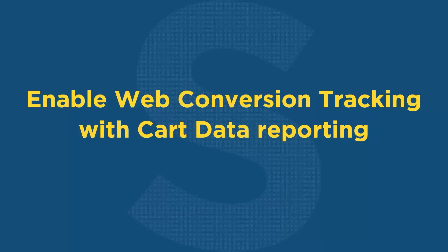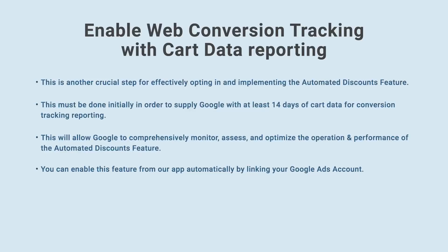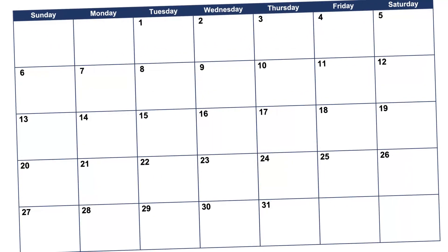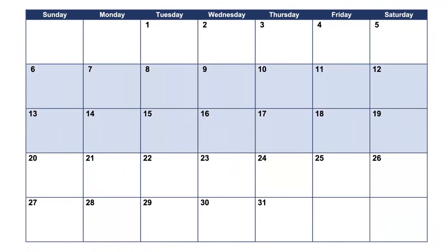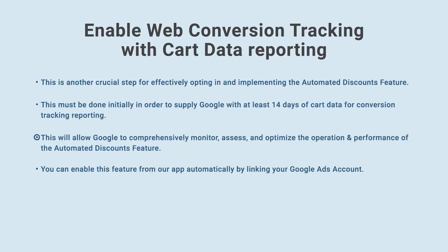Chapter 4: Enable web conversion tracking with cart data reporting. This is another crucial step for effectively opting in and implementing the Automated Discounts feature. This must be done initially in order to supply Google with at least 14 days of cart data for conversion tracking reporting. This will allow Google to comprehensively monitor, assess, and optimize the operation and performance of the Automated Discounts feature. You can enable this feature from our app automatically by linking your Google Ads account.